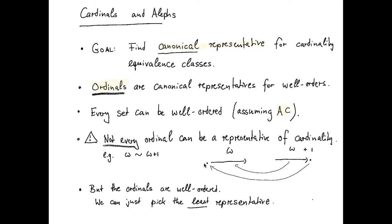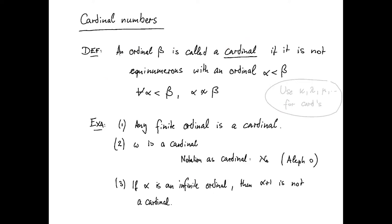So how do we pick our representative among the ordinals of the same cardinality? Well, the ordinals are well-ordered, so we can actually just pick the least representative.